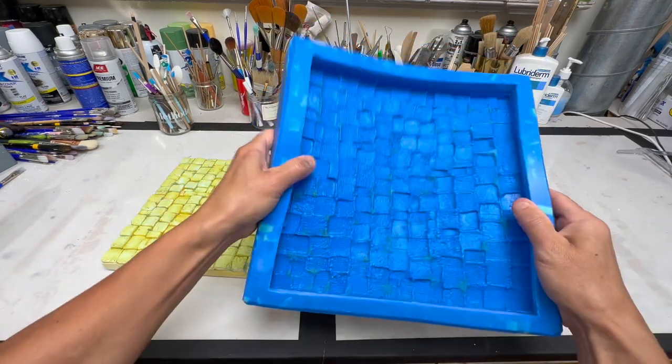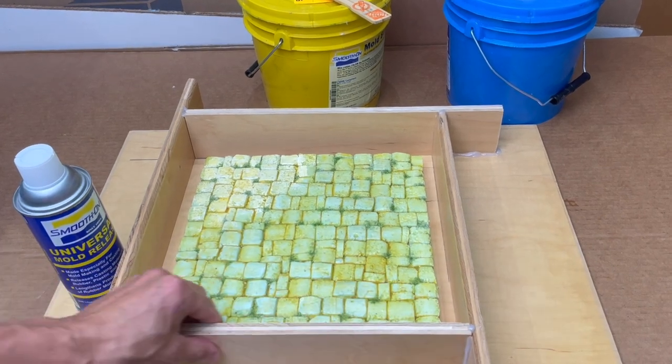This is a platinum silicone rubber called Moldstar 30. First we have to make a mold box.